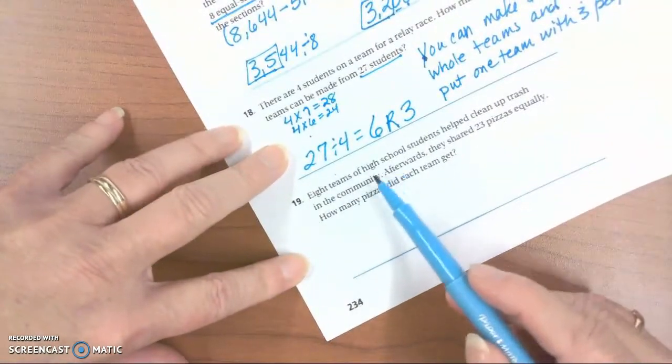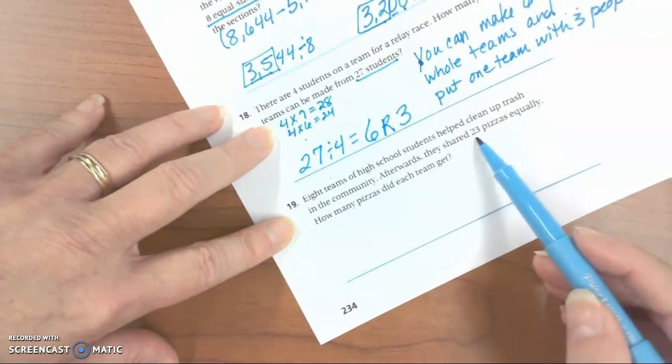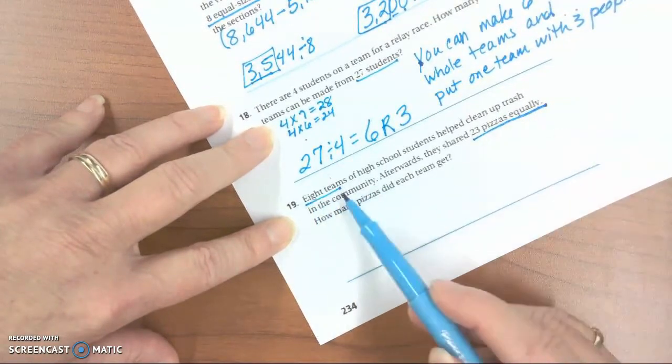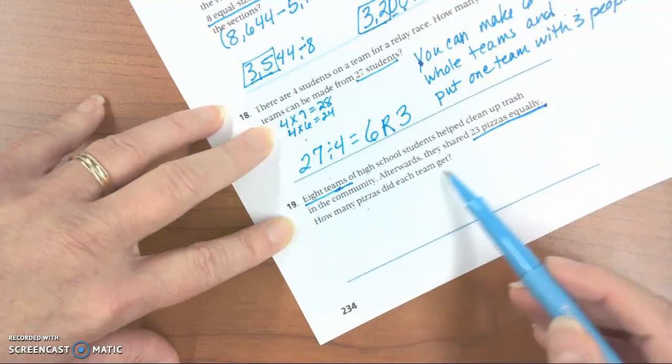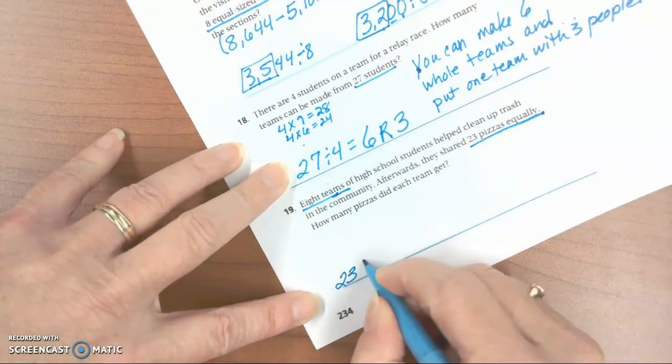So the next problem. 8 teams of high school students help clean up trash in the community. Afterwards, they share 23 pizzas equally. 8 teams, 23 pizzas equally. How many pizzas did each team get? So we're going to also have to interpret the remainder here.